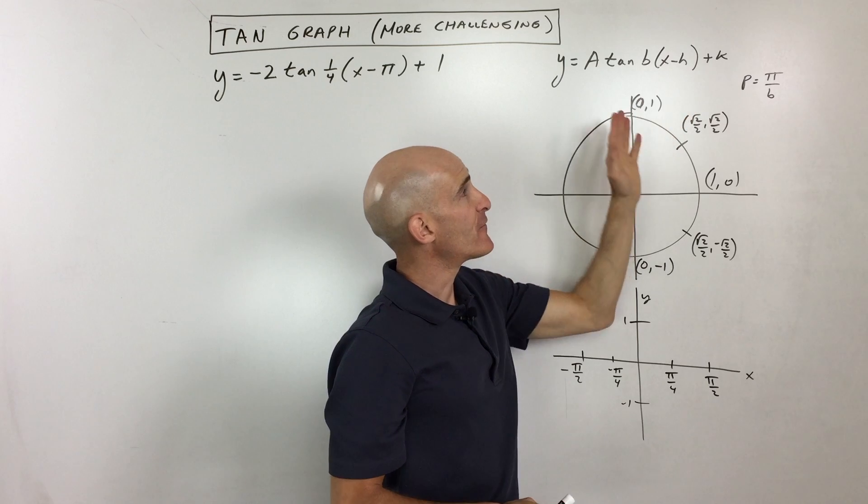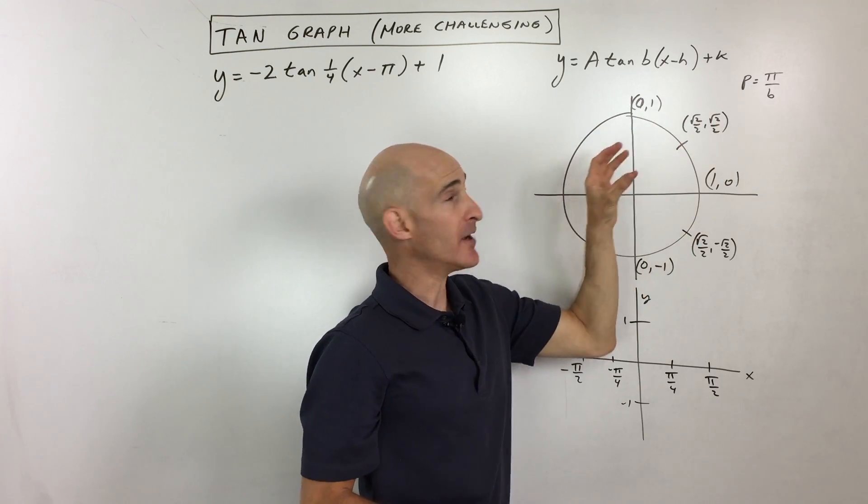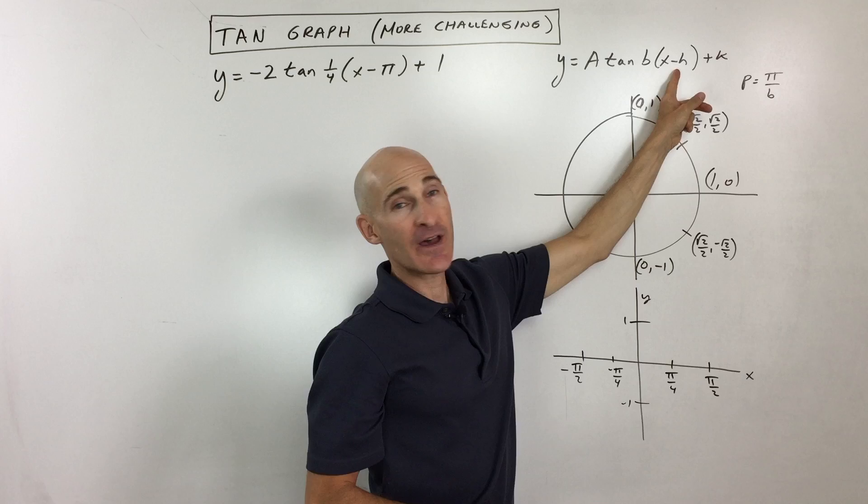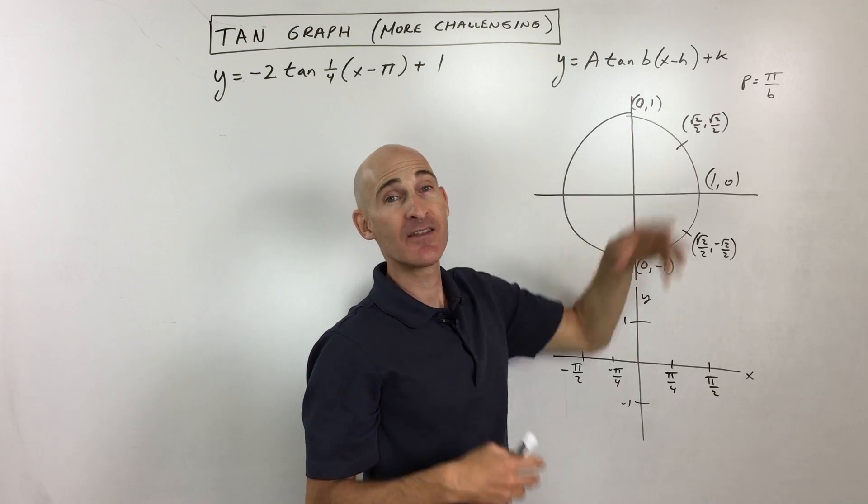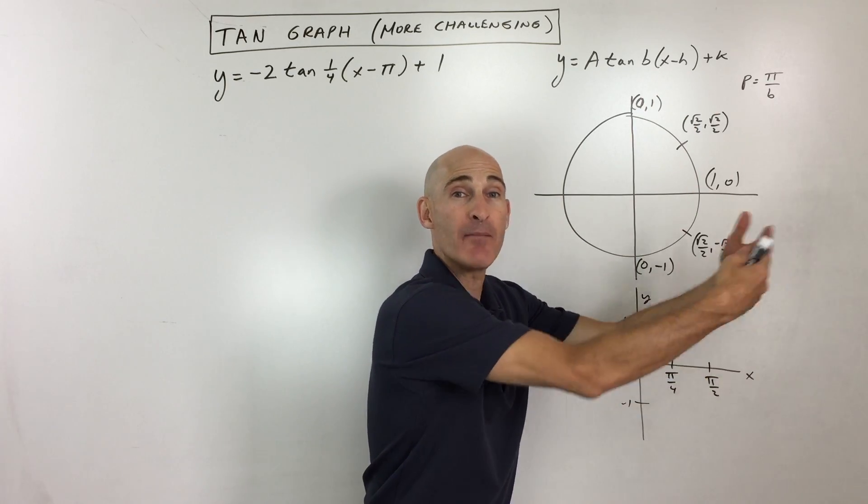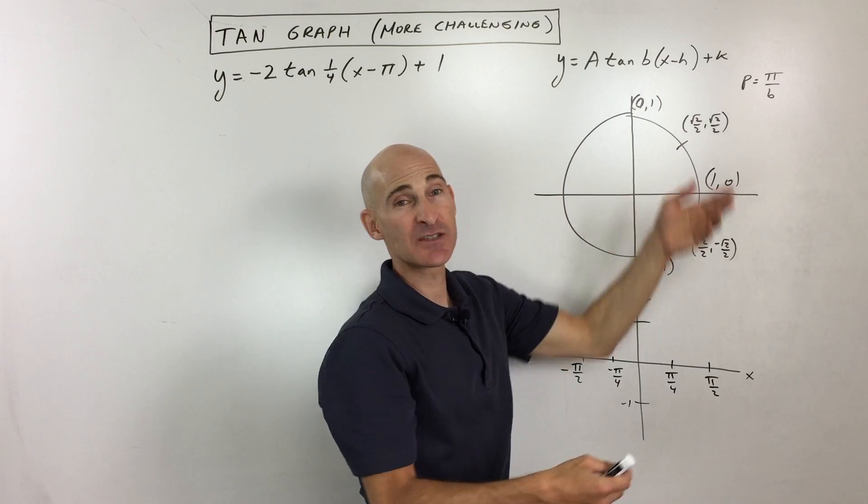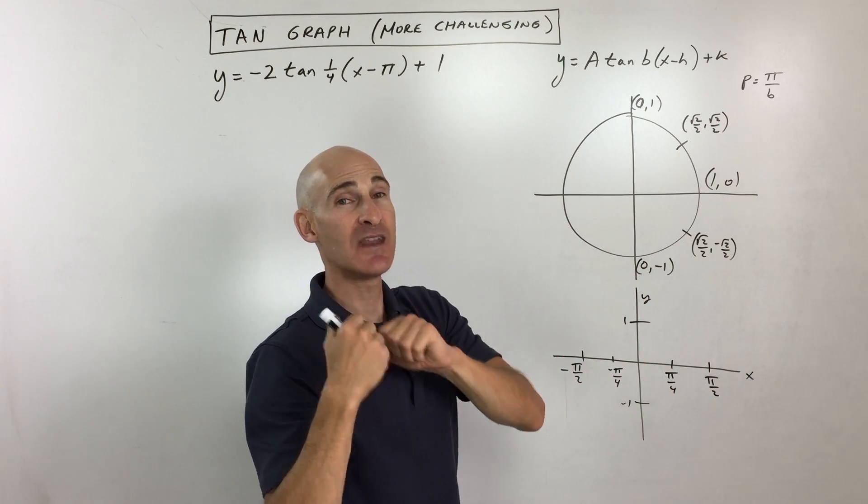What the h does, it's a phase shift. It shifts the graph left and right. But this has the opposite effect. So if you have like x minus pi, the negative pi is actually going to be going to the right, positive pi. If this is plus pi, it's actually going to be going to the left, negative pi.